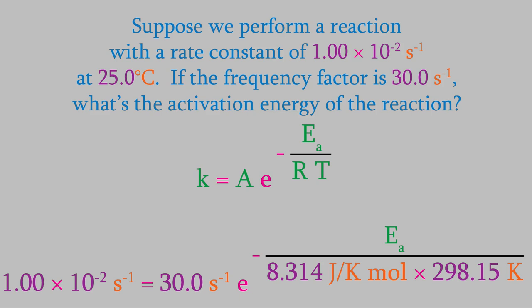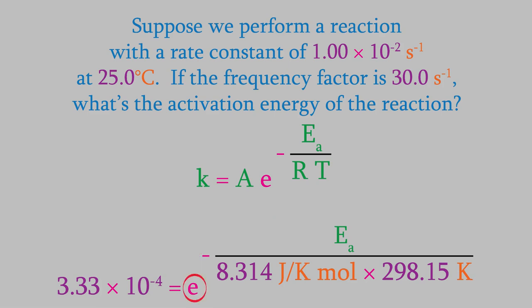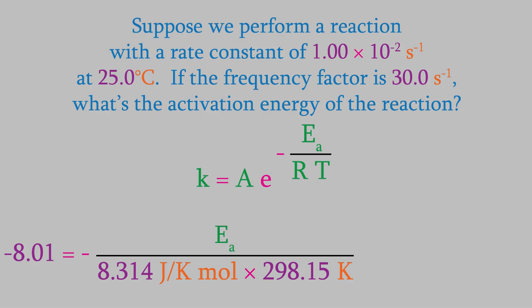We want to get the activation energy, and you can see that it's in the exponent over here. To solve for EA, we'll need to get this term by itself on the right side of the equal sign. To do that, we'll divide both sides by 30.0. Now, we need to get this fraction out of the exponent. From our discussion in video 11, you might remember that we can get rid of the number e by taking the natural logarithm. The natural log of the left side is negative 8.01, so that's what our exponent is equal to. Now, we can solve for EA pretty easily. We get 19,800 joules per mole. Notice that the kelvins canceled out in the unit.